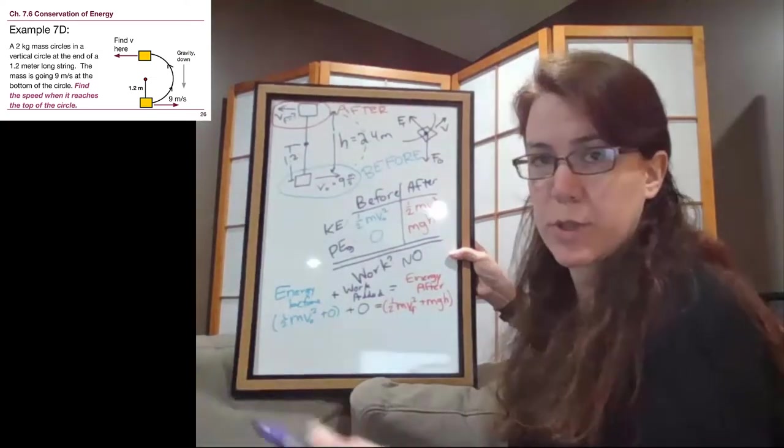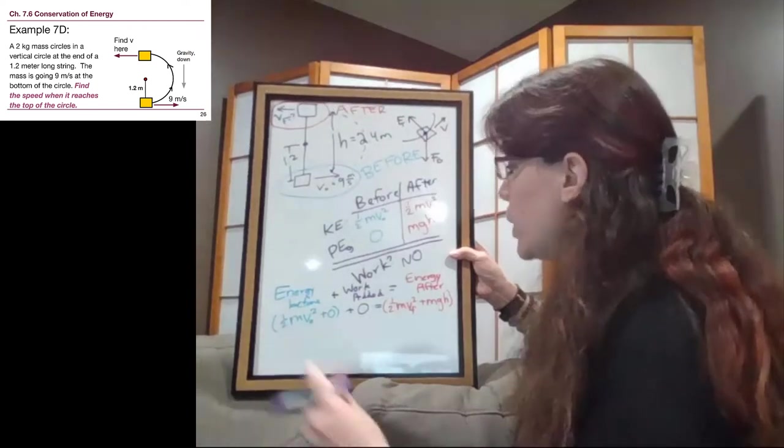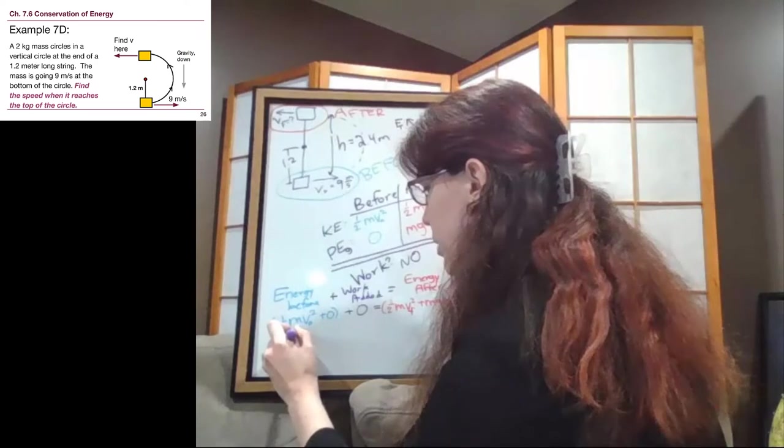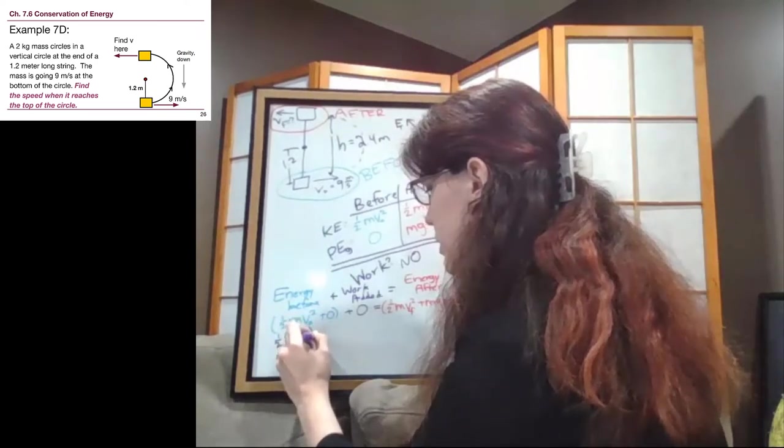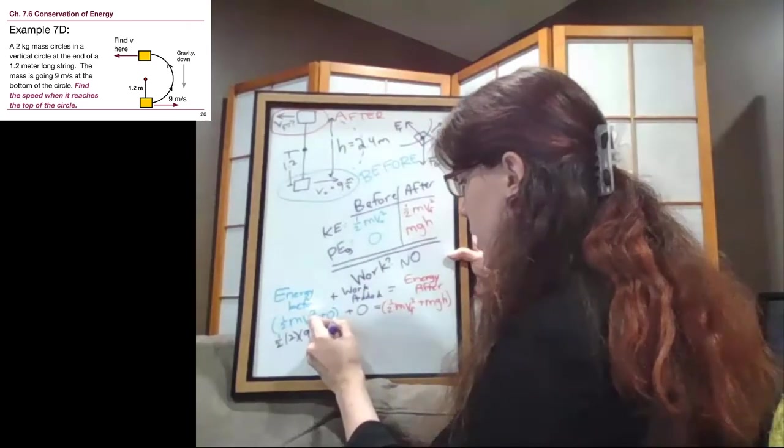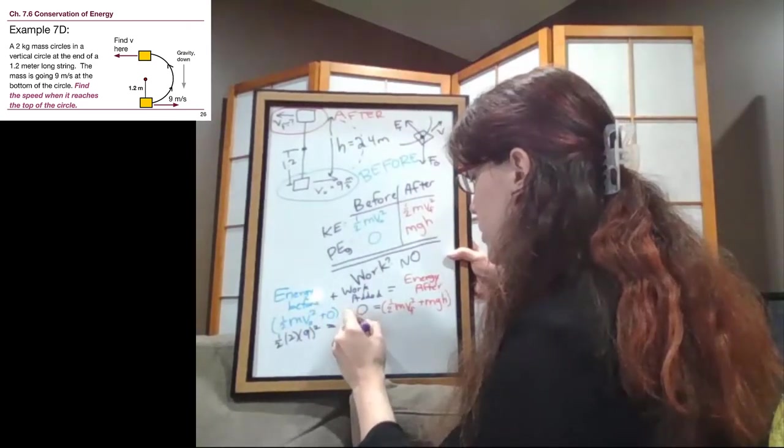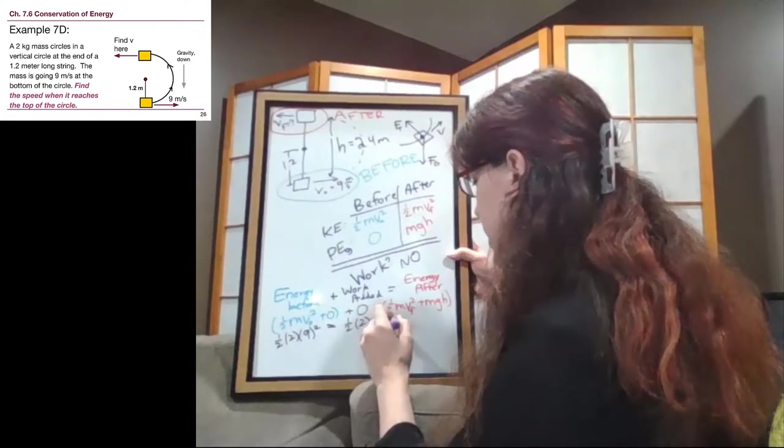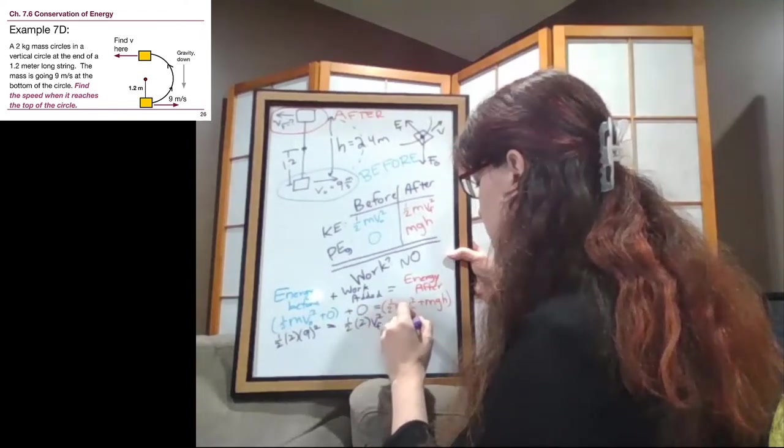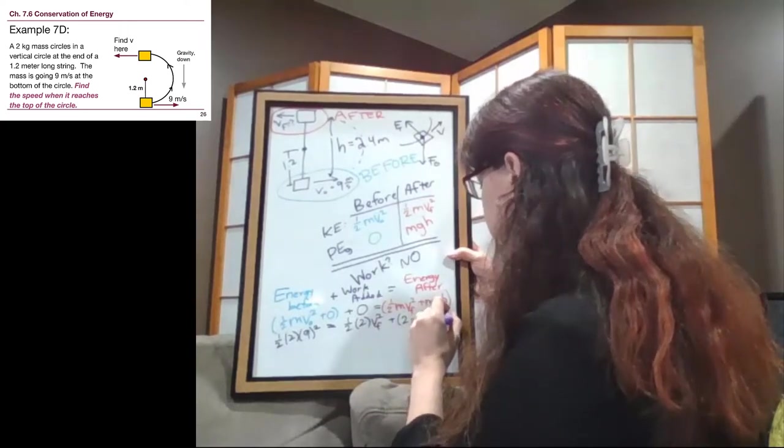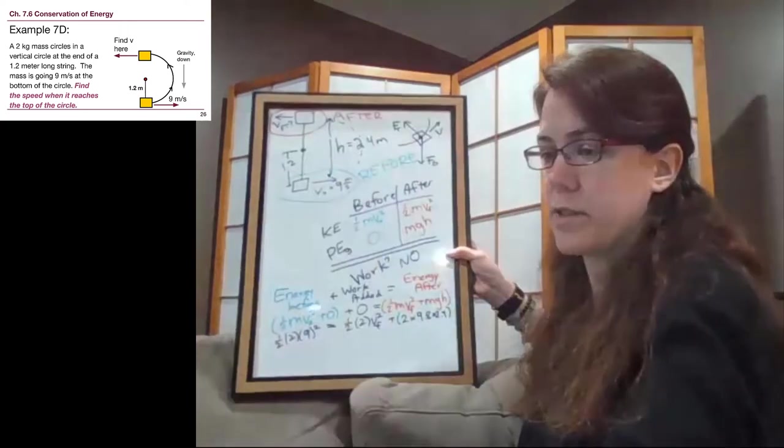So now we can plug in our numbers, and I'm going to switch to purple for all of it. We can plug in our numbers here. We have one half, it's a two kilogram block, initial is nine, that's squared, plus zero, plus zero, that goes away. Then we have one half times two times the final velocity squared, plus two times 9.8 times 2.4. Because remember, the full height is that 2.4.